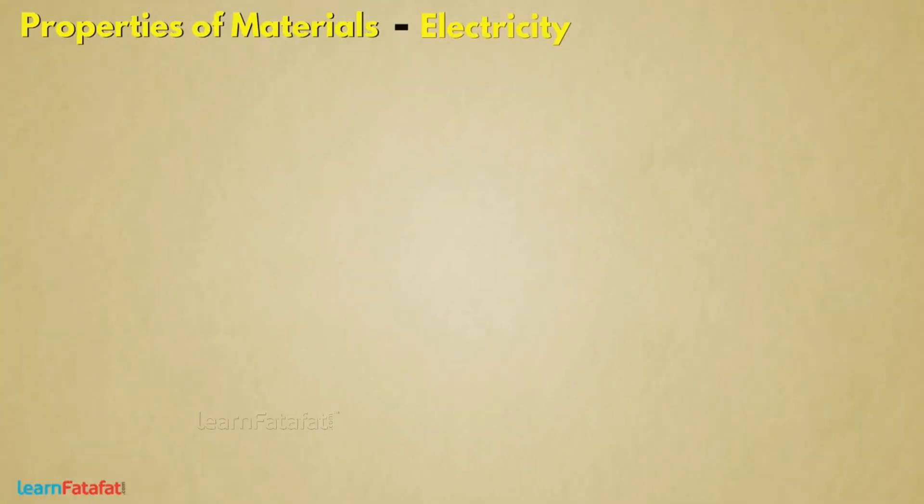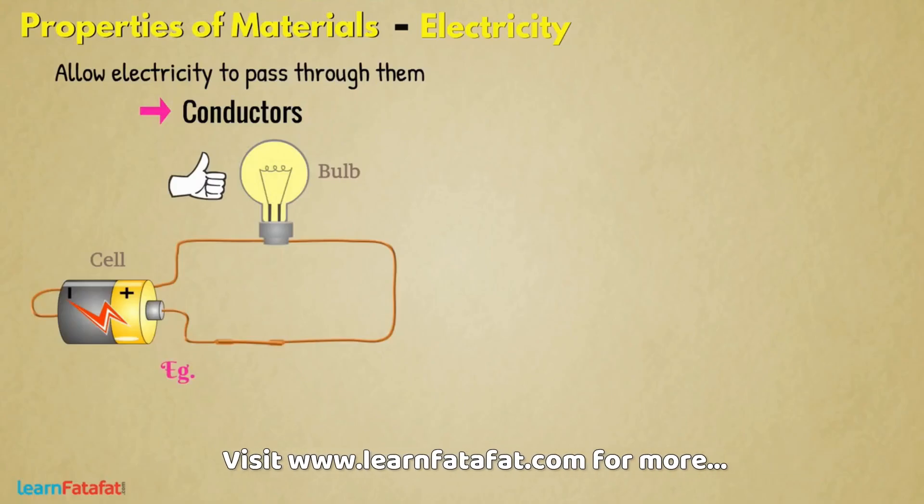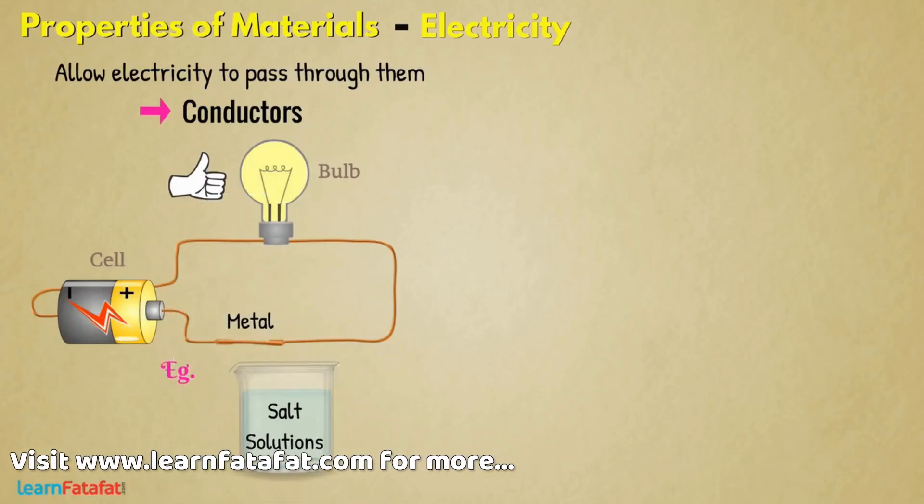Electricity: Some materials allow electricity to pass through them. These are called conductors. For example, all metals, salt solution, etc.